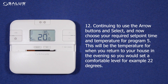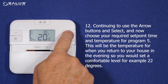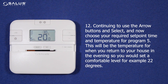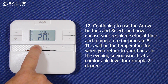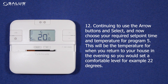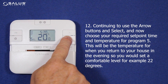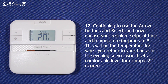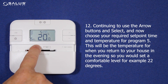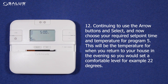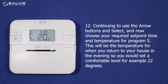Step 12: Continuing to use the arrow buttons and select, now choose your required set point time and temperature for program 5. This will be the temperature for when you return to your house in the evening, so you would set a comfortable level, for example 22 degrees.